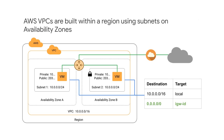Route tables are built for each VPC that configure paths for traffic. Traffic cannot flow outside of the network without security groups, which are firewalls that can be applied to the virtual machine or network. Network access control lists can be configured to allow or deny traffic to the subnet, but they are not stateful.